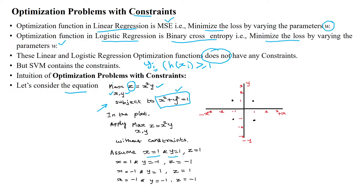When x equals one and y equals one, z is also one. Whenever changing the values of x and y, the constraint must equal one — not less than or greater than one. Four cases are possible: x equals one and y equals one; x equals minus one and y equals one; x equals one and y equals minus one; and x equals minus one and y equals minus one, giving z equals minus one. This gives us four data points based on the given constraint.